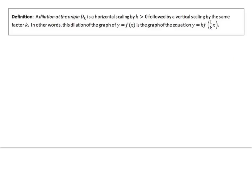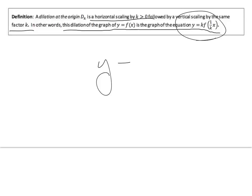Definition: a dilation at the origin d of k is a horizontal scaling by factor k (where k > 0), followed by a vertical scaling by the same factor k. In other words, the dilation of the graph y equals f(x) is the graph of the equation y equals k · f(1/k · x).